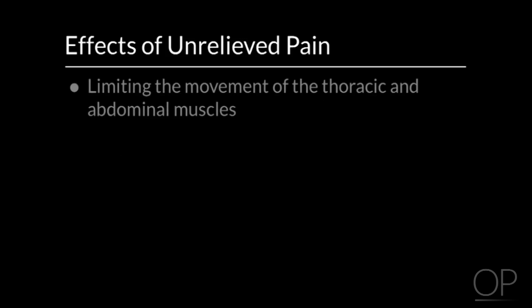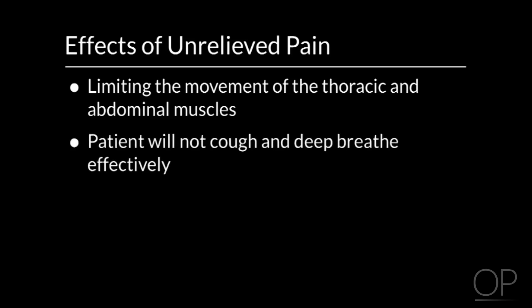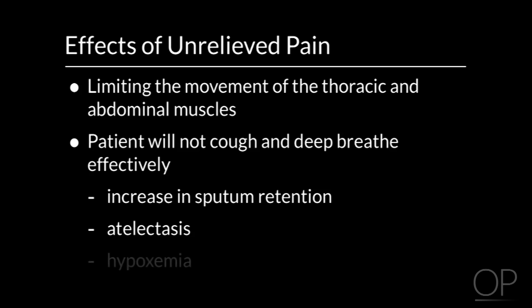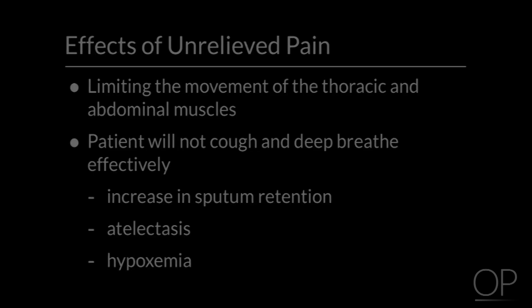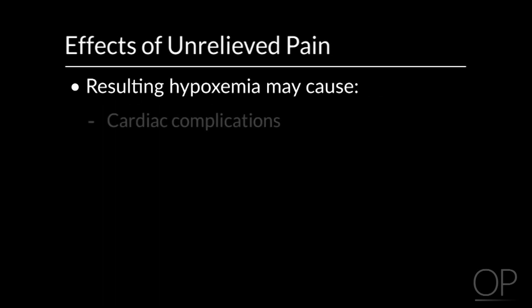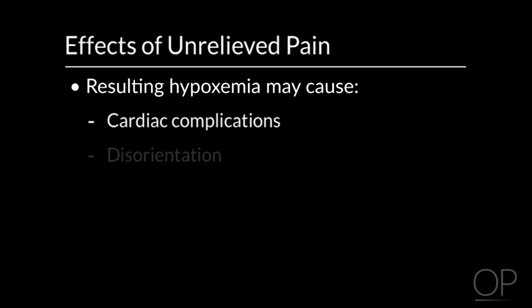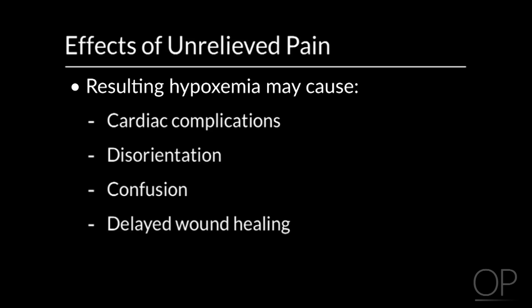Unrelieved pain can result in a patient limiting the movement of the thoracic and abdominal muscles in an effort to reduce pain. When this occurs, the patient will not cough and deep breathe effectively, leading to an increase in sputum retention, atelectasis, and hypoxemia. The resulting hypoxemia may cause cardiac complications, disorientation, confusion, and delayed wound healing. This may lead to a longer length of stay.